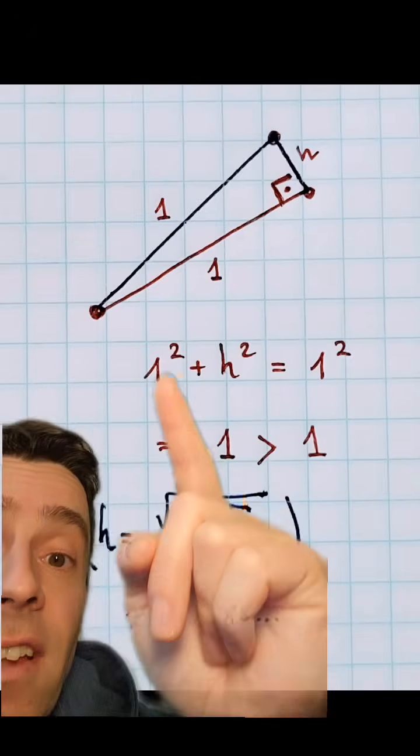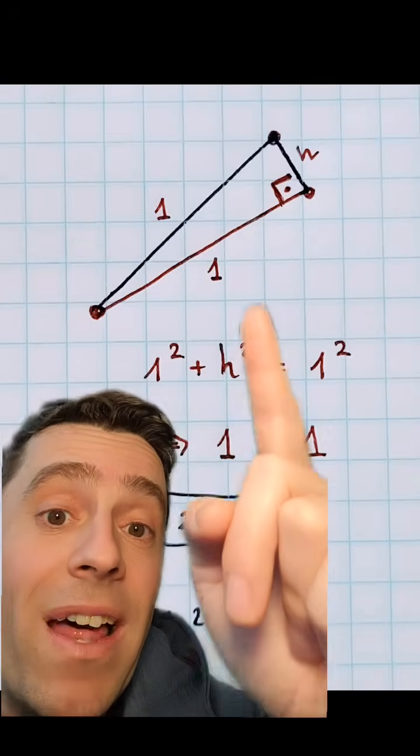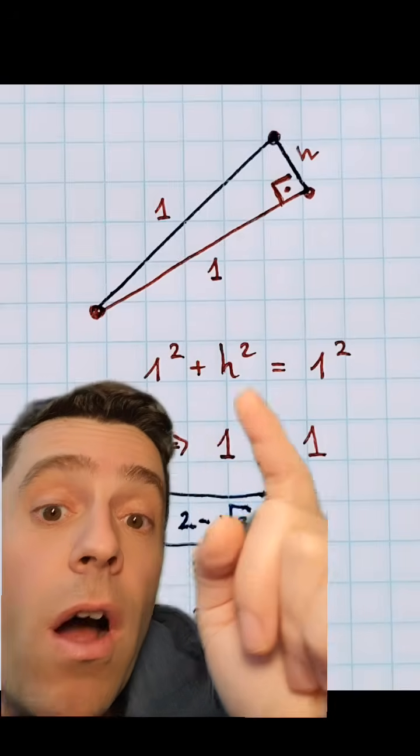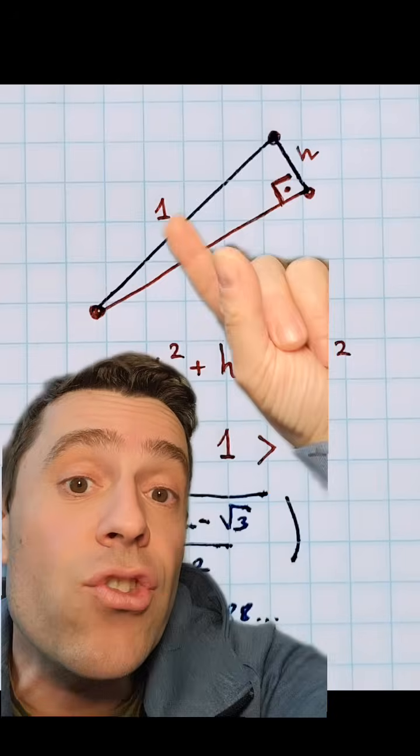So this is also a radius, but that is clearly a 90 degree angle. So Pythagoras applies, and it says that 1 squared plus h squared, the length of that little piece of a side of the dodecagon, is equal to 1 squared.